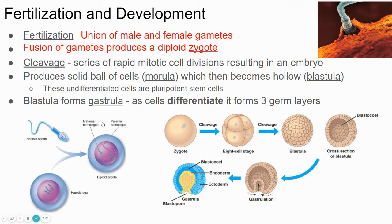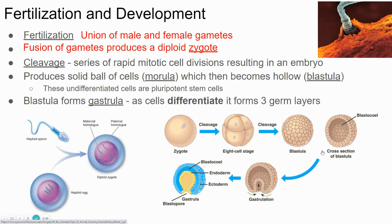Then the blastula starts to indent, which is going to form the digestive tract. Eventually, the cells start to become different from each other. Through the earlier stages, all of the cells are basically identical — just a ball of cells. But after they start to develop a little further, they start to take on different jobs and different roles. That process is called differentiation. The cells are becoming different from each other. Some cells will go on to become skin cells, some cells of the nervous system, or the digestive system, etc.